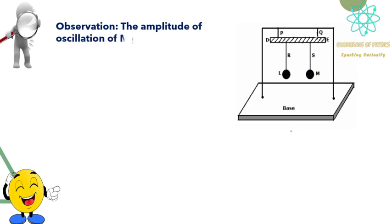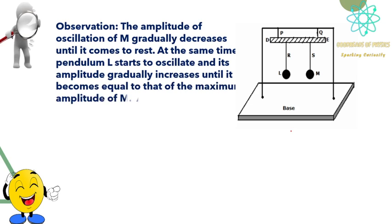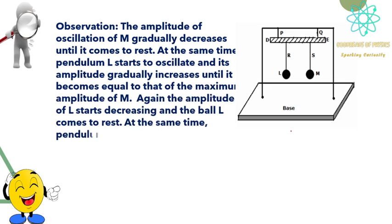Observation: The amplitude of oscillation of M gradually decreases until it comes to rest. At the same time, pendulum L starts to oscillate and its amplitude gradually increases until it becomes equal to that of the maximum amplitude of M.